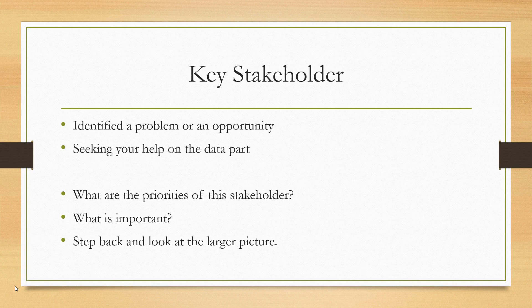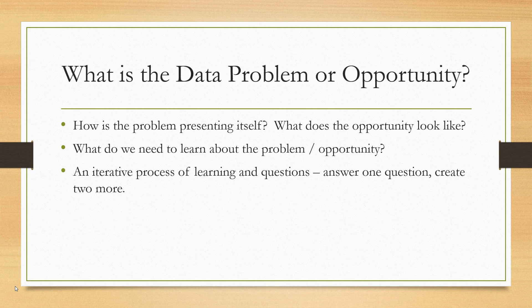For example, scheduling employees for a phone bank is a fairly easy problem, but its solution is fairly important because it could save the organization money and ensure phones are always covered. Identify how the project fits in the larger picture for all data projects. Then get a better idea of the problem or opportunity — how is it presenting itself? If you've seen a drop in sales over the last four quarters, go back and look at customer records. That drop could be a symptom of distribution problems, a marketing issue, or an advertising issue rather than a true sales decline.